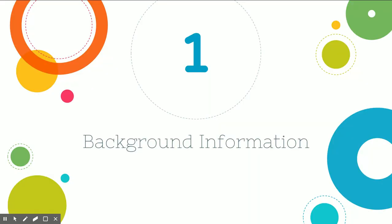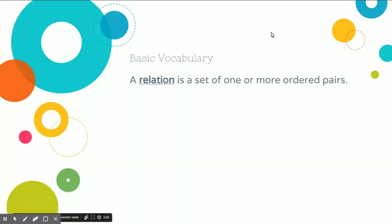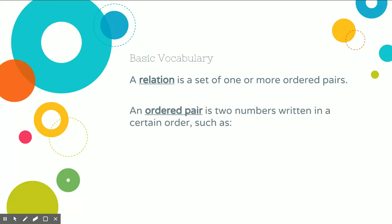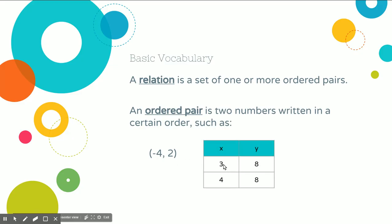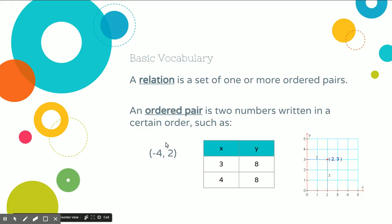First, let's talk about some basic vocabulary and background information. A relation is a set of one or more ordered pairs. An ordered pair is two numbers written in a certain order. You probably are used to seeing it in parentheses, where negative 4 represents the x value and 2 represents the y value. You might also see ordered pairs written in tables with an x and a y, or written on a graph.